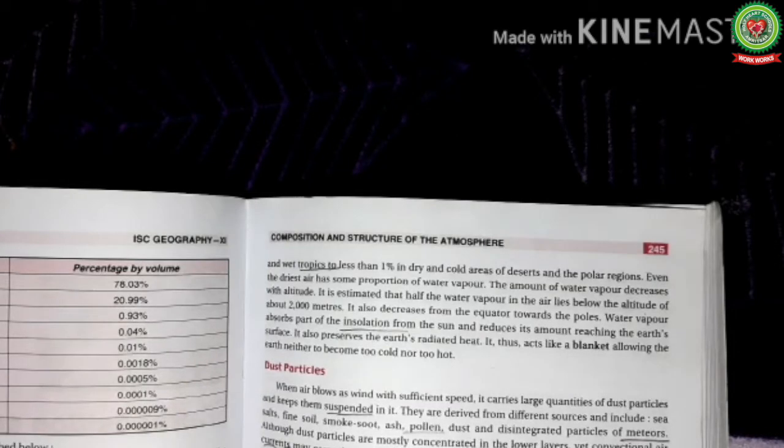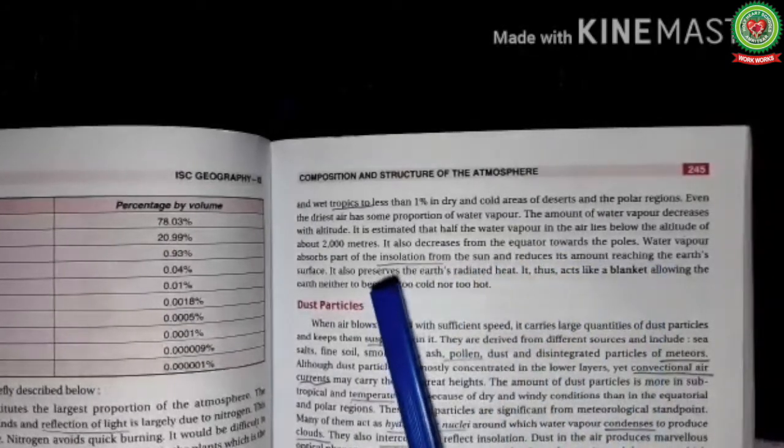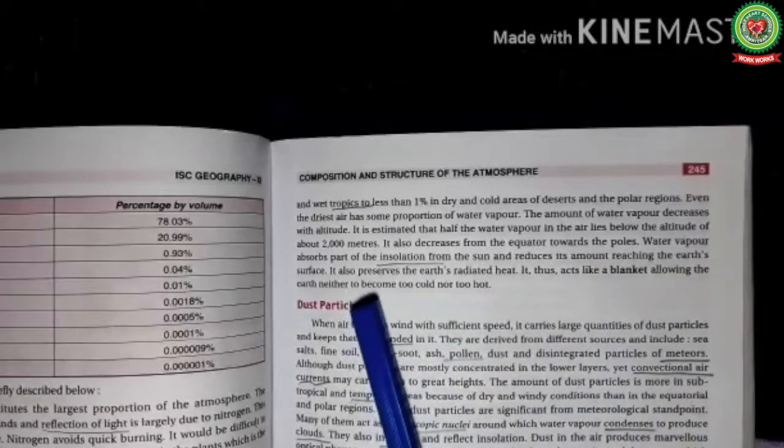Water vapor accounts for about 2% of the atmosphere by volume. It is more in warm and wet tropics where it can be about 4%, but in dry and cold areas of deserts and polar regions it can be less than 1%. The amount of water vapor decreases with altitude — it is estimated that half the water vapor lies below about 2,000 meters altitude. Water vapor absorbs a large part of the insolation and reduces its amount reaching the earth's surface. It also preserves the earth's radiated heat, thus acting as a blanket.